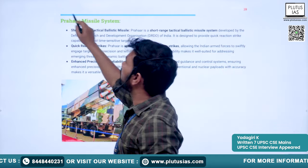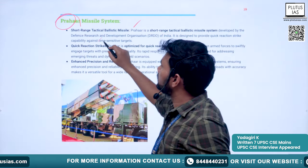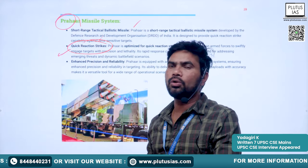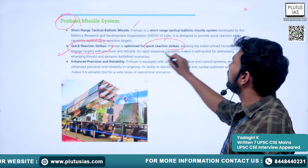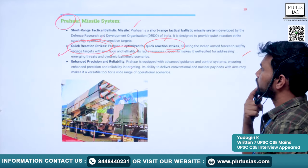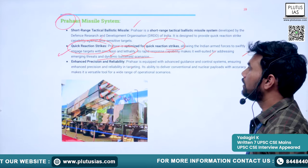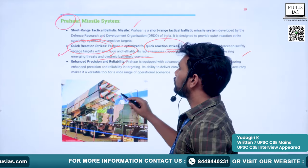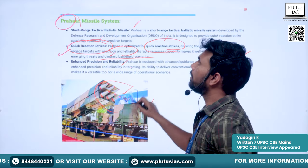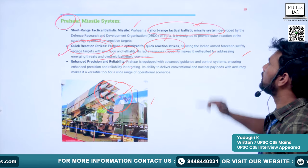Prahar is a short-range tactical ballistic missile, similar to Prithvi. It enables quick reaction strikes — whenever India is attacked, it can respond swiftly with precision and lethality. It has enhanced precision and reliability, making it well suited for addressing emerging threats and dynamic battlefield scenarios.